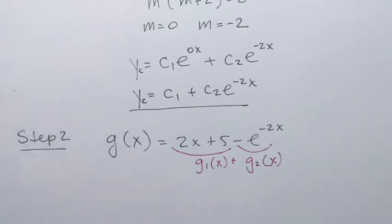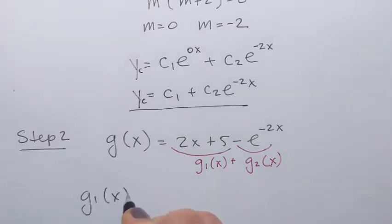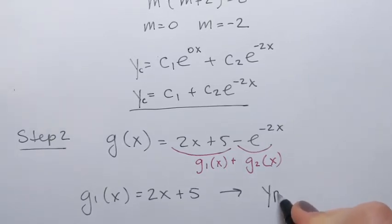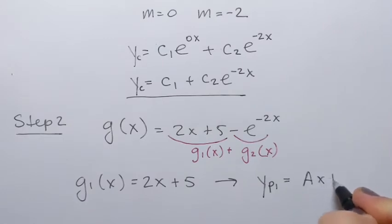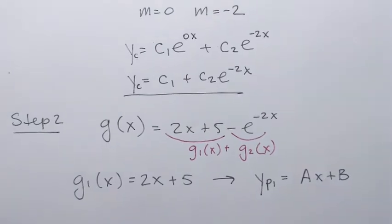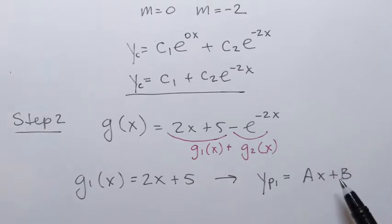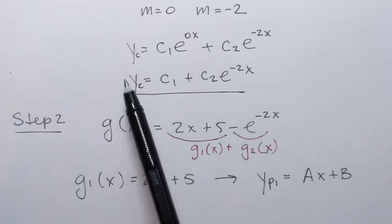Since g1(x) is a linear function, the first part of the particular solution, yp1, should have the same form: ax plus b. But I always have to check if any terms of this particular solution duplicate terms in the complementary function.